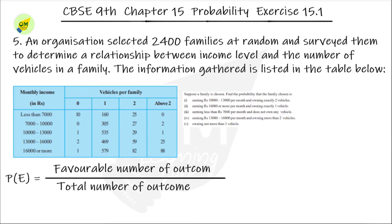Third subdivision: earning less than 7,000 per month and does not own any vehicle — that is zero vehicles. Checking the less-than-7,000 column for zero vehicles, the value is 10. So the probability is 10 by 2400. Cancelling the 10, we can simplify this ratio.